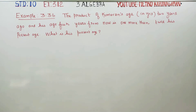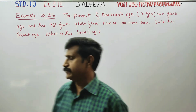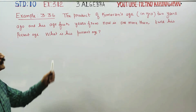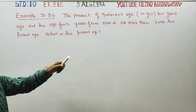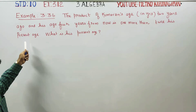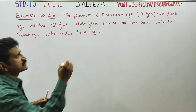Dear 10th standard students, I am Etro Karanagaran. In example 3.36, the product of Kumaran's age 2 years ago and his age 4 years from now is one more than twice his present age. In this case, we will discuss about Kumaran's age.